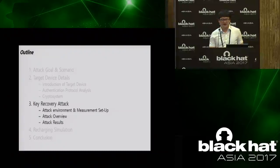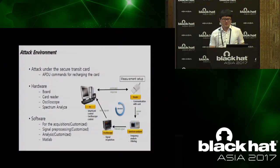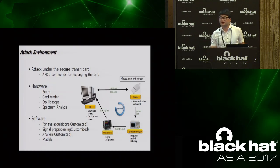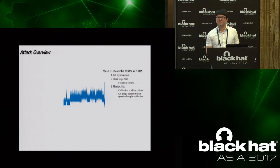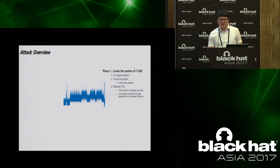Now I will explain the key recovery attack. Our environment setup is a general power analysis attack setup, except that we used a spectrum analyzer for denoising. The first step to recover the key is to determine whether triple-DES operates in a selected power trace. Using every point in the power trace is inefficient since it requires very significant time and computing power. Thus, we must select the most possible positions using methods such as input-output signal analysis, visual inspection, and plaintext CPA.